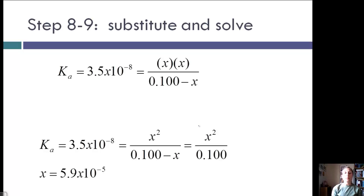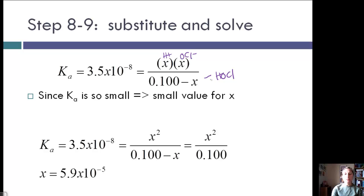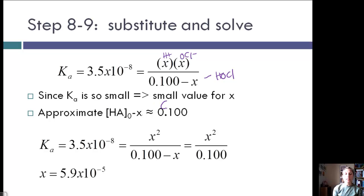Steps eight through nine: substitute those equilibrium expressions into Ka and solve. We have X from H⁺ and OCl⁻ in the numerator and the HOCl expression in the denominator. Since Ka is so small, we assume X is small, approximating the initial concentration minus X as just the initial concentration 0.1. Substituting that in, we get an X value of 5.9×10⁻⁵.